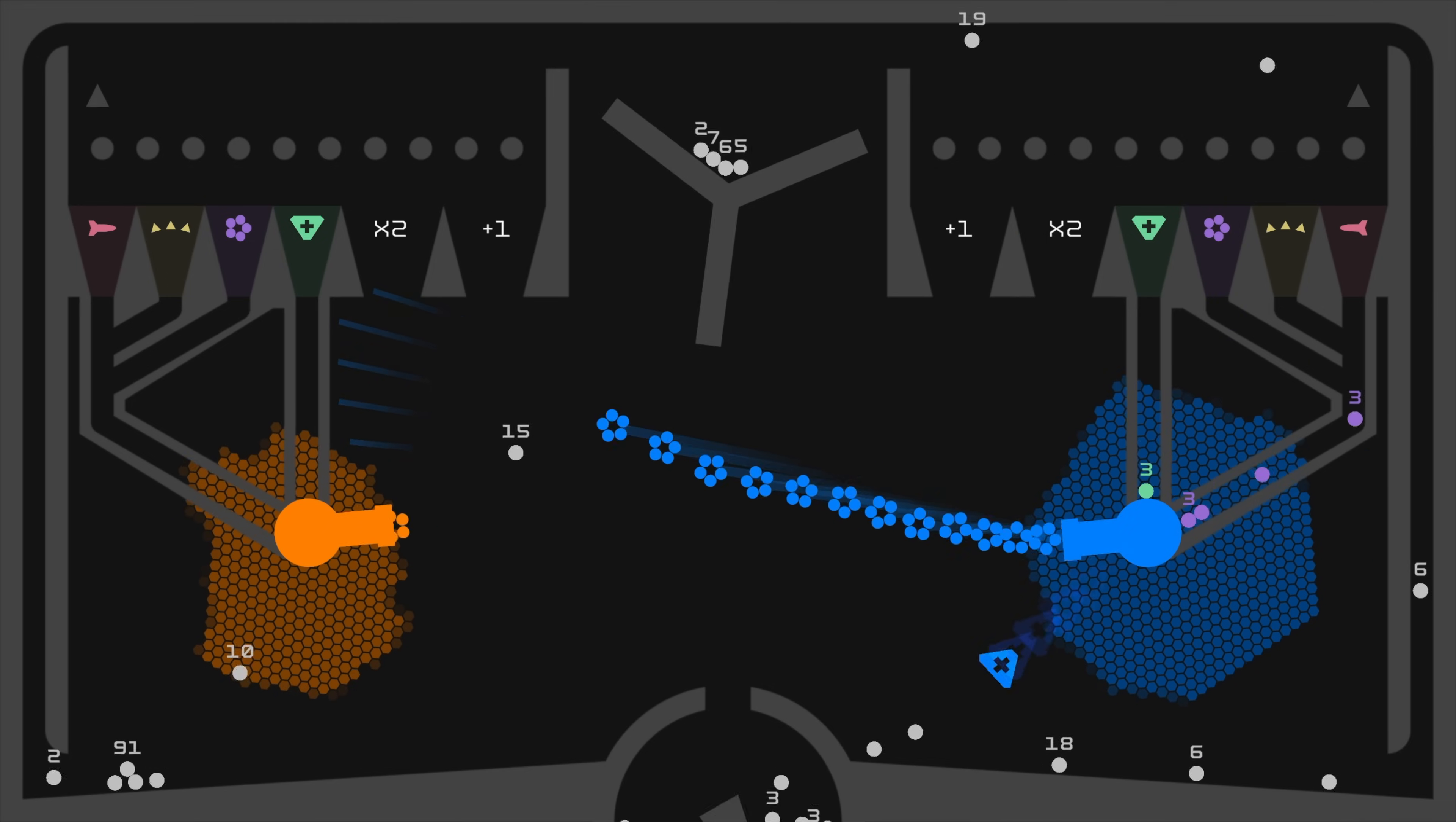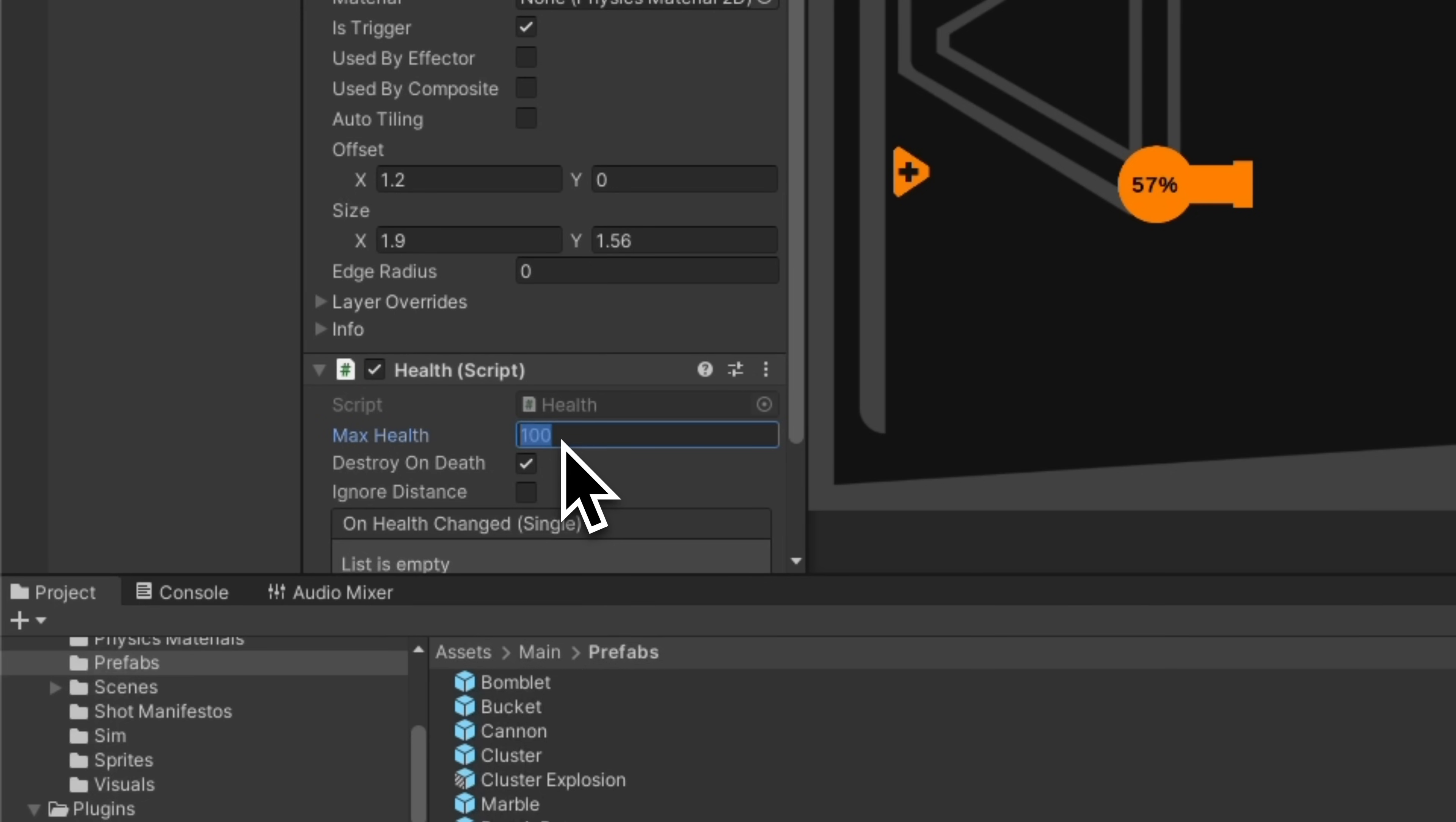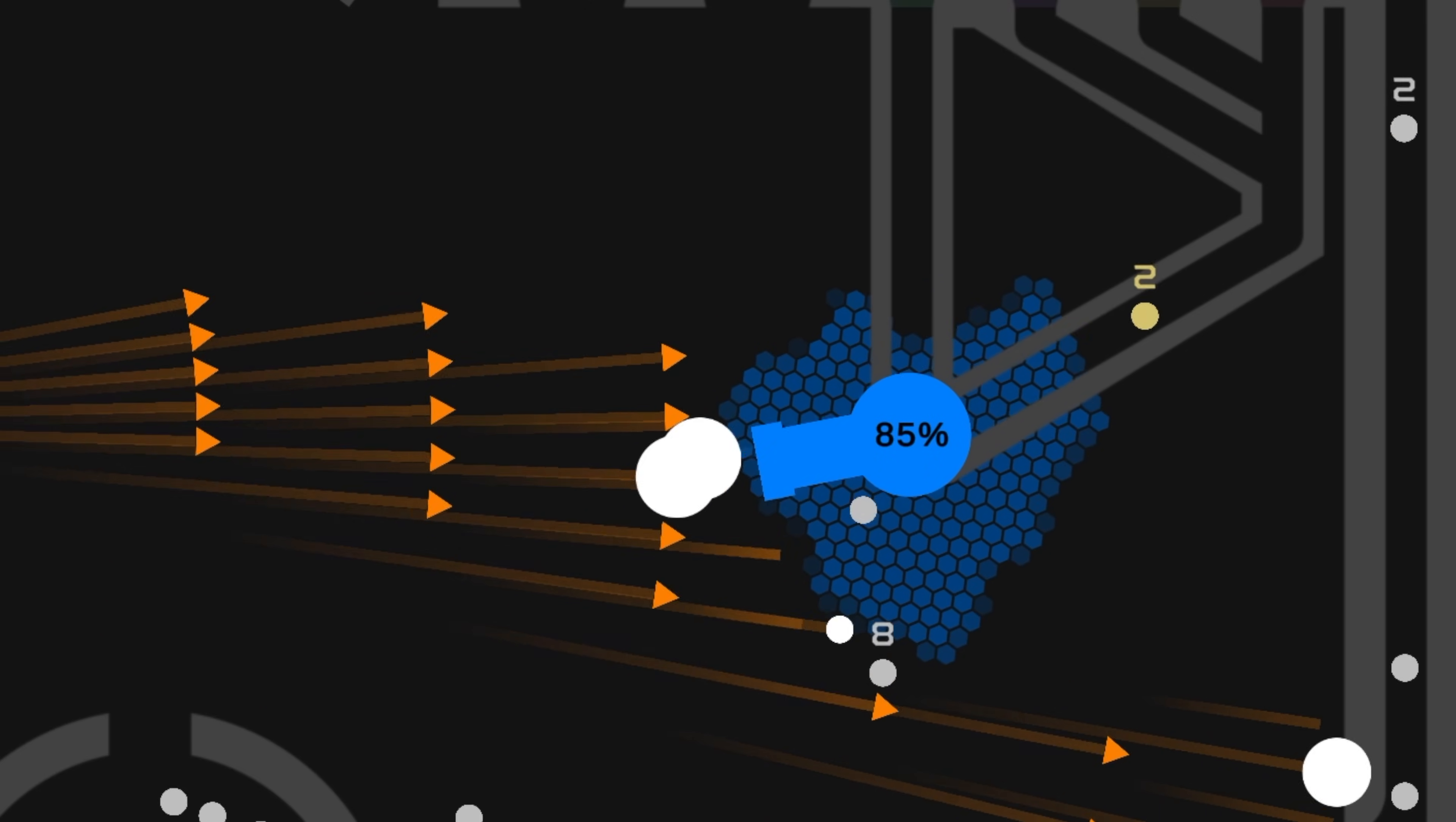But how is the battle going to end? What we need is a win state, so let's add health to the cannons. Unlike the shields, the health can never be regenerated, so damage is permanent.